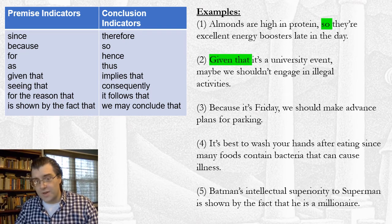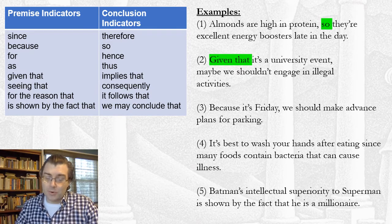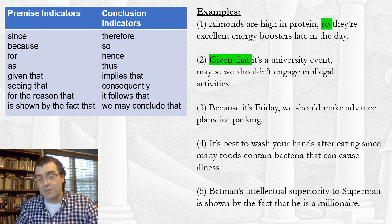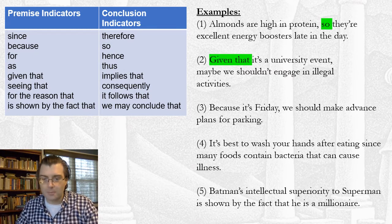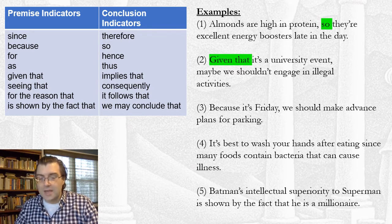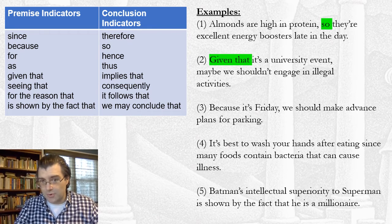The second passage reads: 'Given that it's a university event, maybe we shouldn't engage in illegal activities.' The phrase 'given that' is pretty clearly indicating that what follows it is a premise — some evidence supposed to support what follows later in the sentence. So 'given that' is serving as a premise indicator, and you'll see it in our list of premise indicators on the upper left of the screen. In the first example we had a conclusion indicator; in this second example we have a premise indicator.